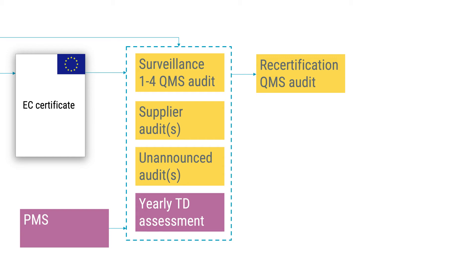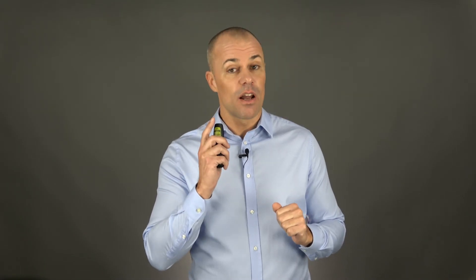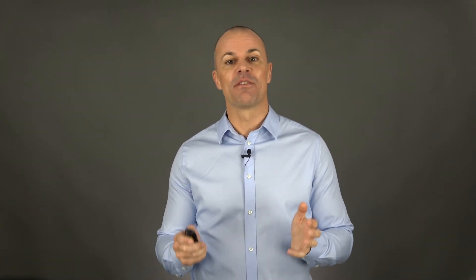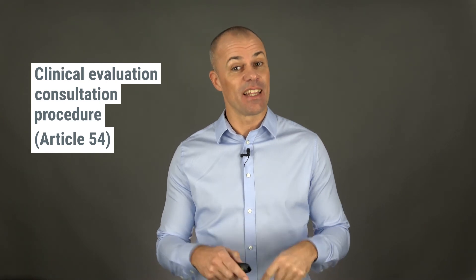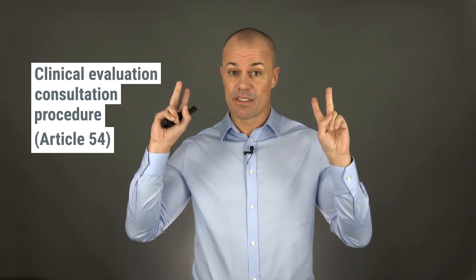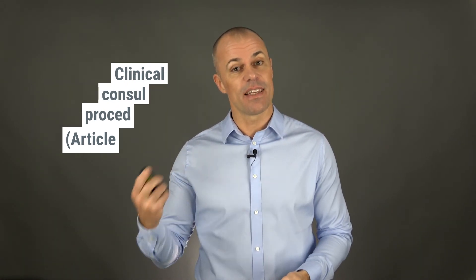Even though this is clearly stated in this MDCG endorsed document, I know that this is not always the case with all notified bodies. There will be a difference in the amount of technical files called in, since for class 3 devices, all devices need to have their technical documentation assessed before you get your EC certificate. For class 3 implantable devices and class 2b active devices intended to administer and/or remove a medicinal product, there is also the requirement to go through a clinical evaluation consultation procedure. This means the notified body shall send their clinical evaluation assessment report to a designated expert panel for a second opinion and their recommendation, which takes additional time.